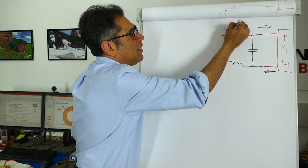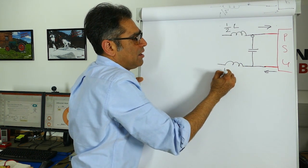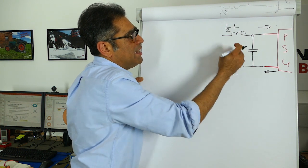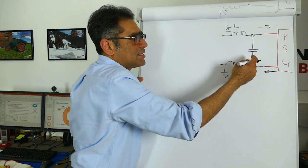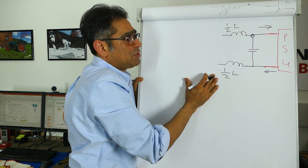So you end up with half L over here and another half L over here and of course these form an LC filter with this capacitor here and that filters differential mode noise.